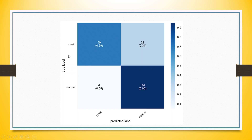For example, we have a person who either has COVID or is normal, and we have a kit to detect whether a person has COVID or not. The kit makes predictions, and we compare them against the actual data. If a person has COVID and the kit detects it correctly, that is a success. Similarly, if a person is normal and the kit detects that correctly, that is also a success, meaning the kit is working properly — 50 plus 114, that is 164 cases where the kit works successfully.